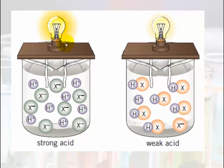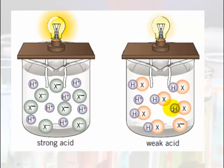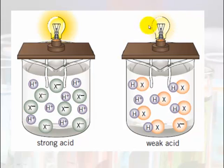So a strong acid put into water is a good conductor of electricity because it forms lots of ions — you can see the light globe glowing nice and brightly. A weak acid does not form a lot of ions; it has really only formed one or two ions, an anion and a cation, so you get a very weak light bulb glow.